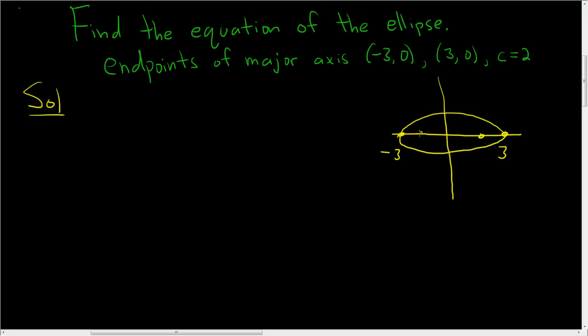And here are the foci, so this will be 2 and negative 2. How do I know that? Because this is c, c is 2.